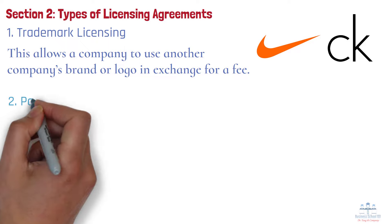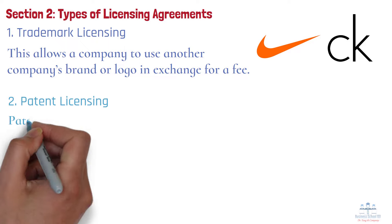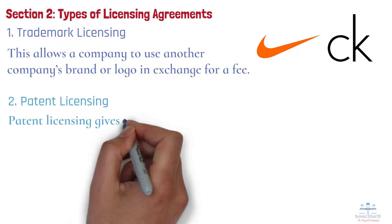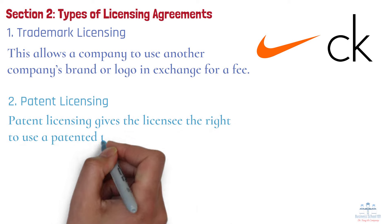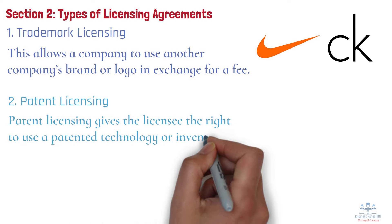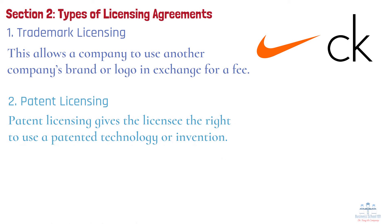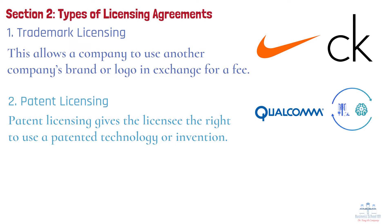Number 2: Patent licensing. Patent licensing gives the licensee the right to use a patented technology or invention. For example, Qualcomm licenses its patented wireless communication technologies to smartphone manufacturers.